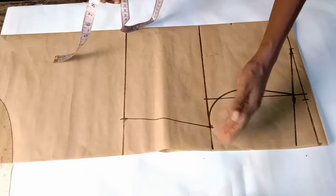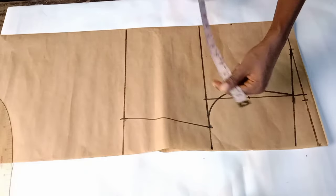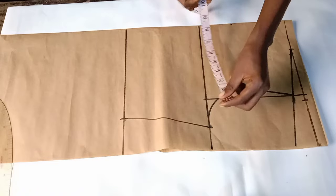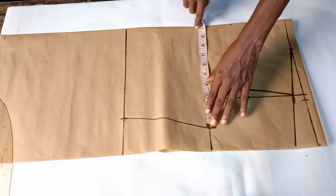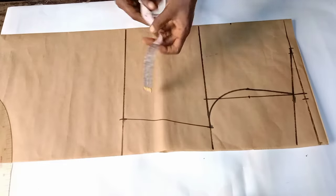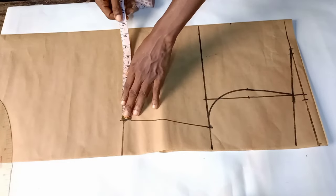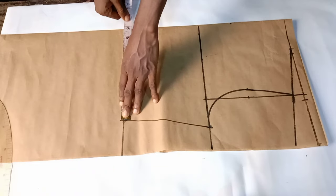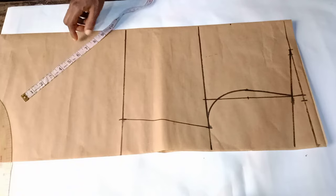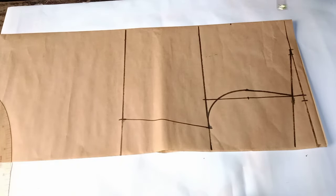For my horizontal measurement, my bust circumference measurement is 40 inches, so divided by four that is 10 inches, which is what I have here, also inclusive of the quarter measurement of my waist. This is my shoulder slope and the neckline I'll be working with.